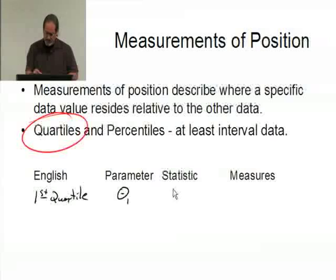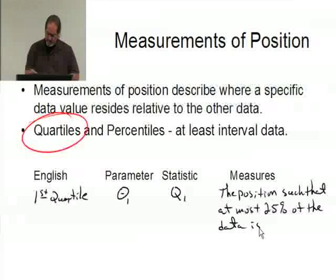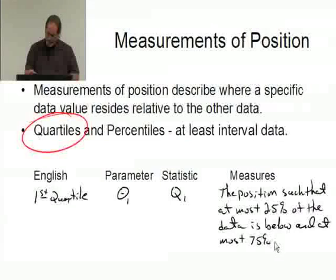The statistic is Q1 and it measures the position such that at most twenty-five percent of the data is below and at most seventy-five percent is above.